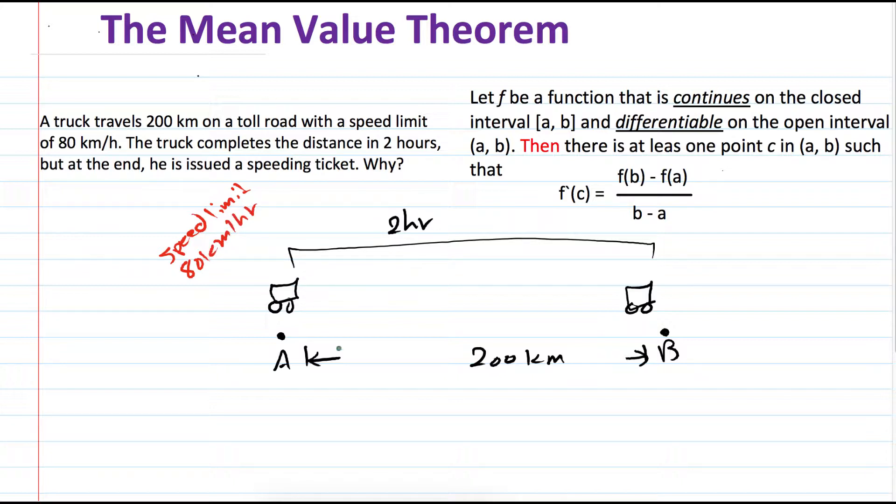Suppose that we have a policeman right here. When he enters point A, he is driving at the speed limit, 80 kilometers per hour. And when he arrives at point B, there's also a policeman, and they check him. The driver is driving at 80 kilometers per hour, but still he's issued a ticket. Why is that?